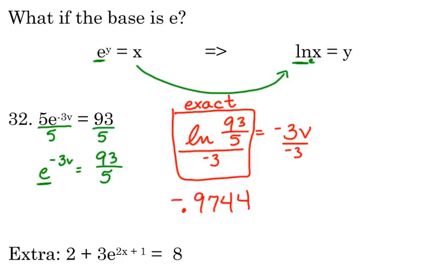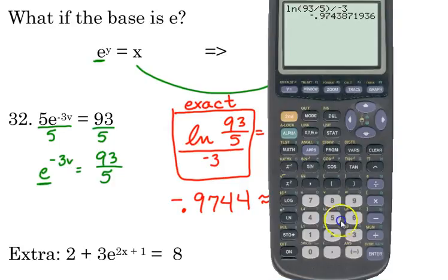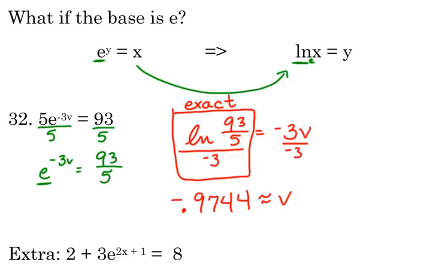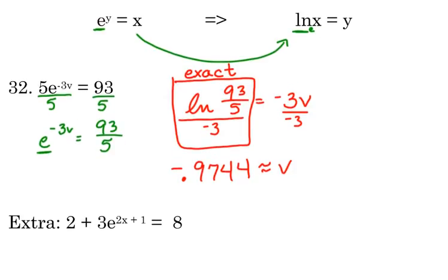And the approximation is negative 0.9744 if we round to the nearest 10,000. That is our approximate answer for V. And just like I showed you the other day, you can check this.